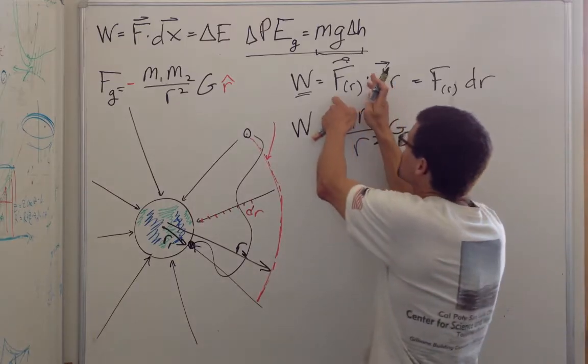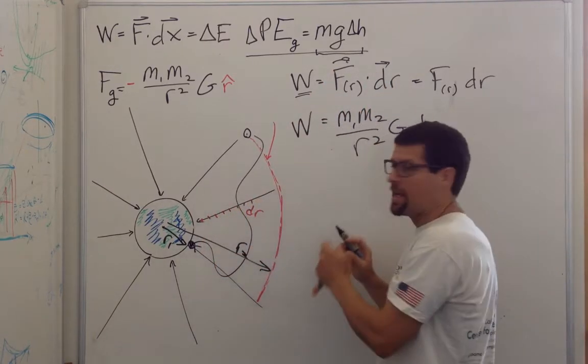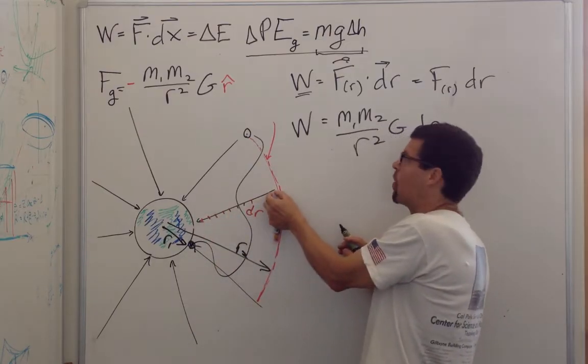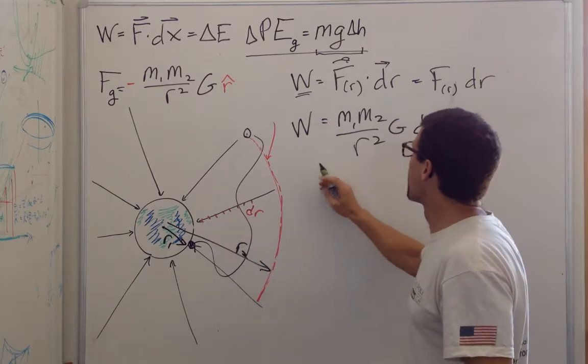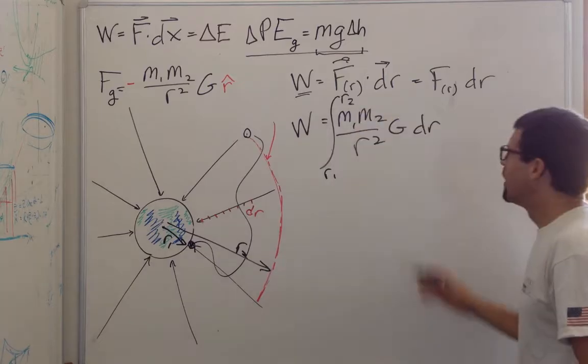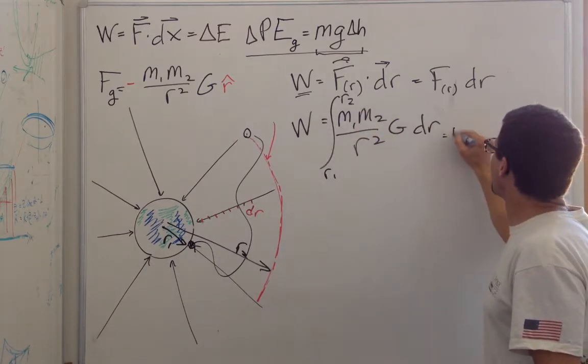And because these are parallel, I can now write this just as F as a function of R times dr. So a little bit of work needed to take us from one point to the next. Now it can be written as the product of M1, M2 over R squared times G times dr. And we can see that the force of gravity is reduced as we get further away. So this amount of work is going to be less than this amount of work.